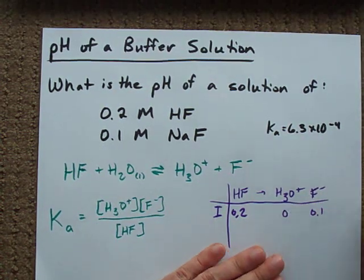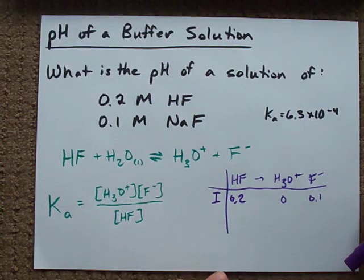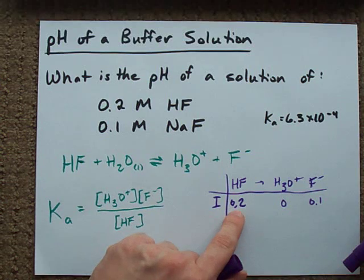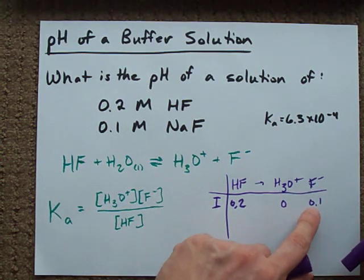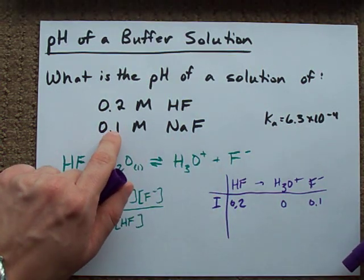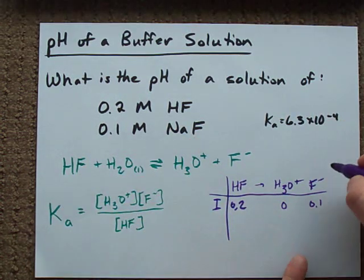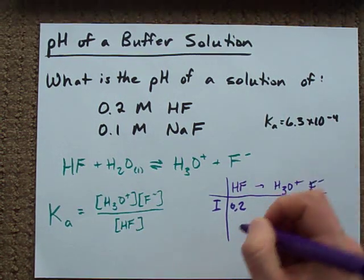In a lot of weak acid, weak base equilibria, you're gonna start with only reactant and you won't have product left. But here, because we're starting with some conjugate base already in solution, our initial concentration of the conjugate base is not zero.